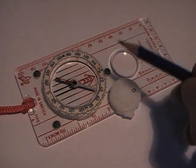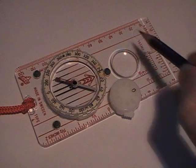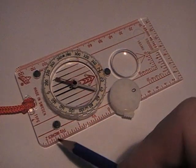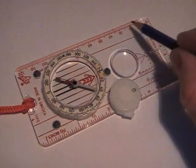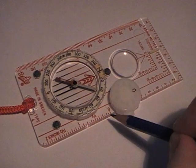This is the basic parts of a compass. We'll start with the base plate which has two measuring scales on either edge there.